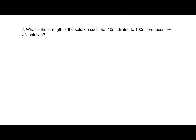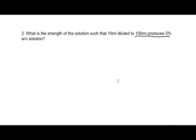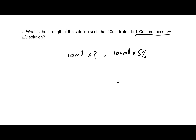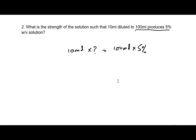Second question: what is the strength of the solution such that when we dilute 10 ml of it to 100 ml it produces a 5% weight by volume solution? So I am making 100 ml of 5% by diluting 10 ml. The question is: what is the strength of the solution I'm going to dilute? We can simply apply C1V1 = C2V2.